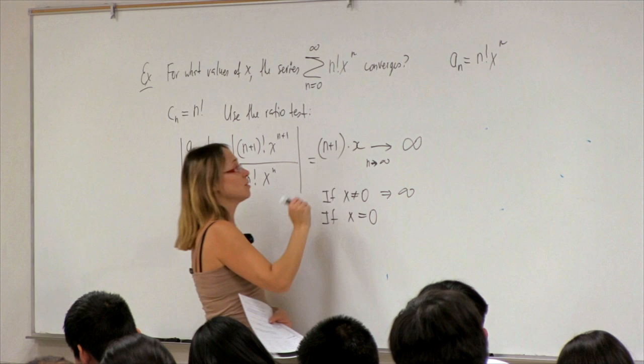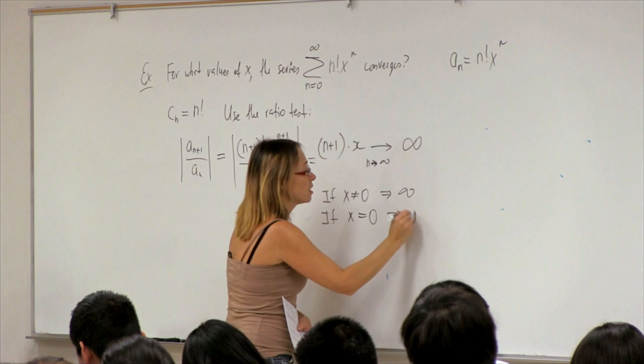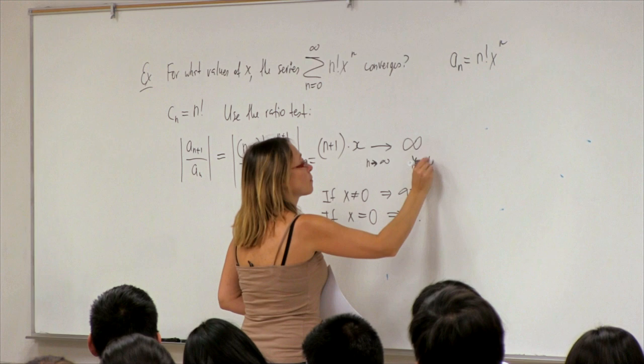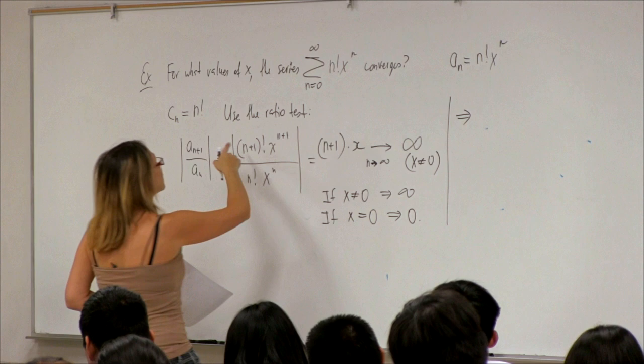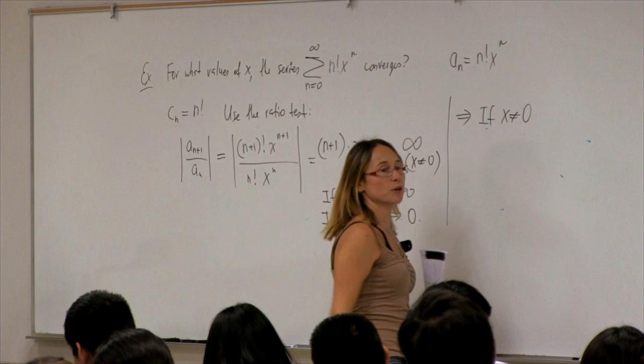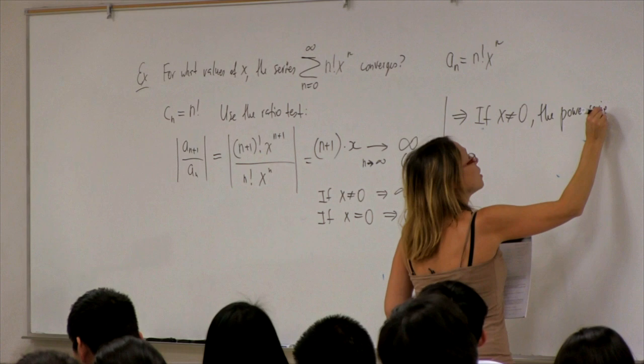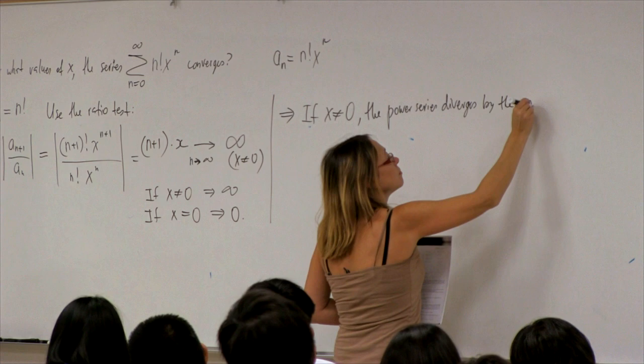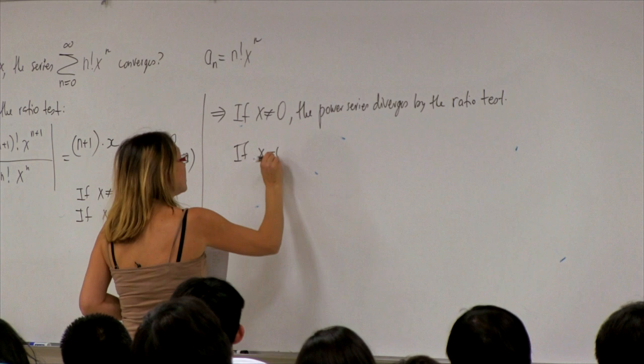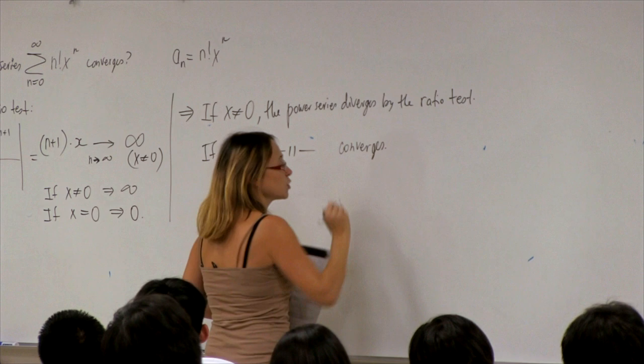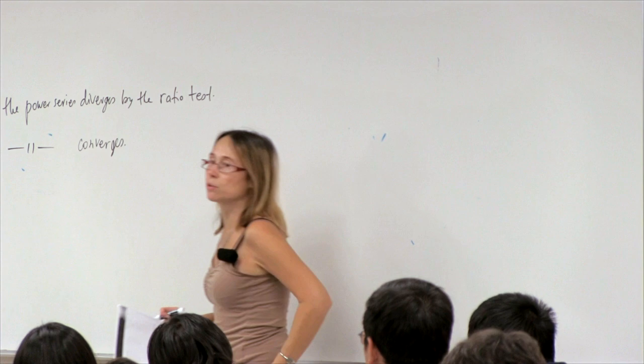If x equals 0, this term becomes 0 and the limit is 0. So we conclude by the ratio test that if x is any number other than 0, the power series diverges. If x equals 0, the power series converges. In this example, convergence is only observed for one single value of x, namely x equals 0.